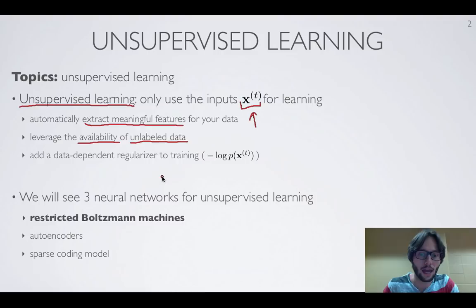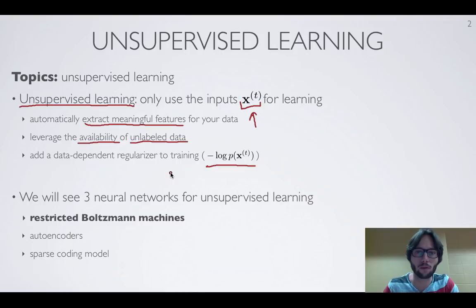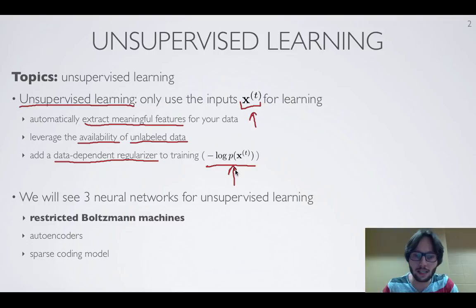We've also discussed that if we perform generative learning as opposed to discriminative learning, then in our objective function we have a term that looks like minus the log of the probability of the input. We've justified using generative learning as performing a sort of data-dependent regularizer.